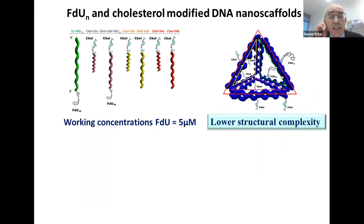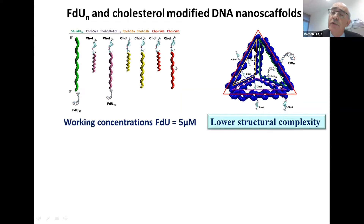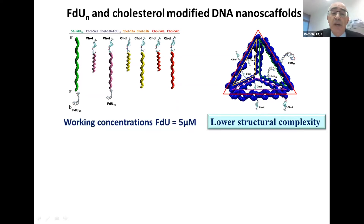The first molecule we prepared is a tetrahedron made of six oligonucleotides, each carrying either drugs or molecules to facilitate cell uptake. As a facilitator we use cholesterol, and as a drug we use a deca-nucleotide — an oligonucleotide of 10 bases carrying 10 floxuridines.